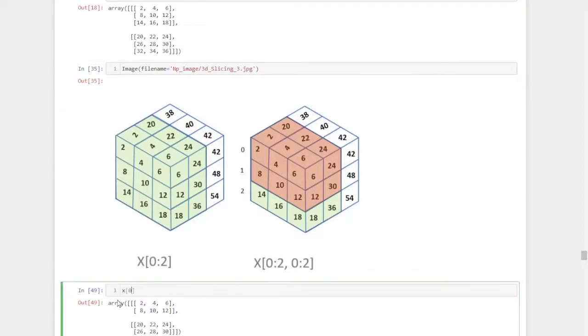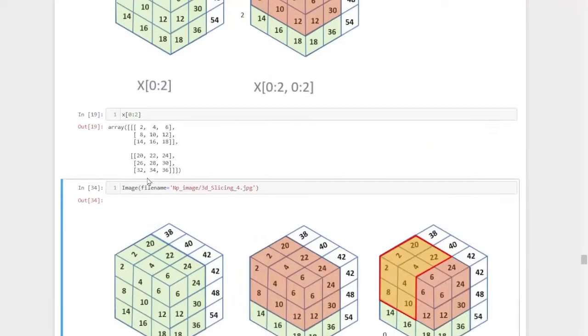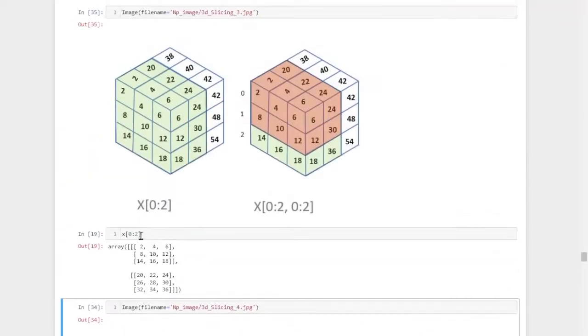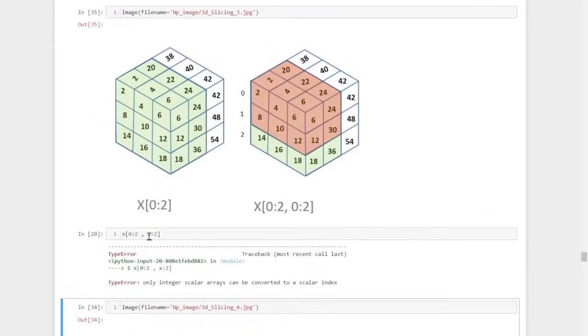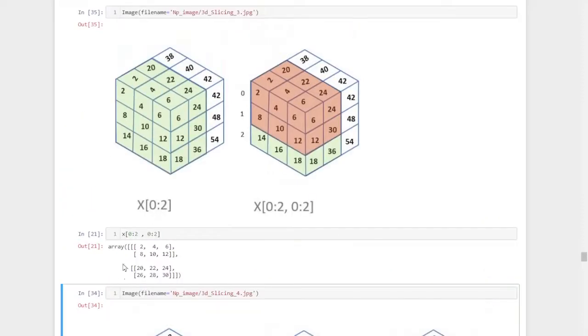For example, x of 0 colon 2, we got this much. Now again, comma, then again 0 colon 2. So we will trim out this much portion only. Whatever is in the red color, this much portion only we will trim out. So we got this much we trimmed out. Now we trimmed out this much portion.